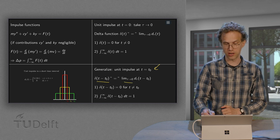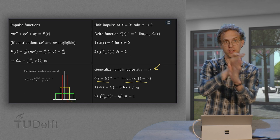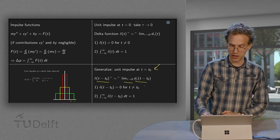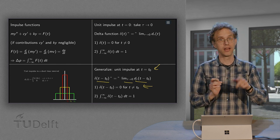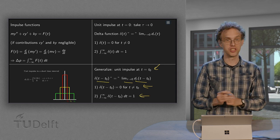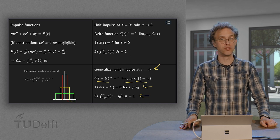We take the limit τ to zero of d_τ, but then not at zero, set it at zero, but at t minus t₀. And then similarly our delta function is zero everywhere except for t equals t₀, and that is infinite. And again the integral is still one. So that is how a delta function works.